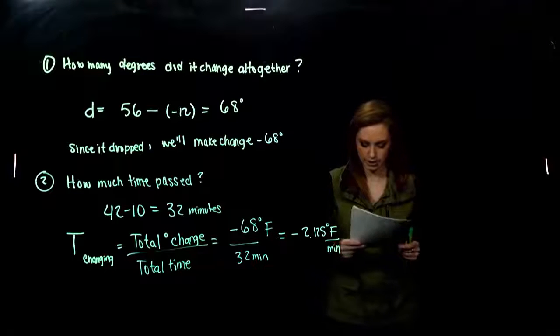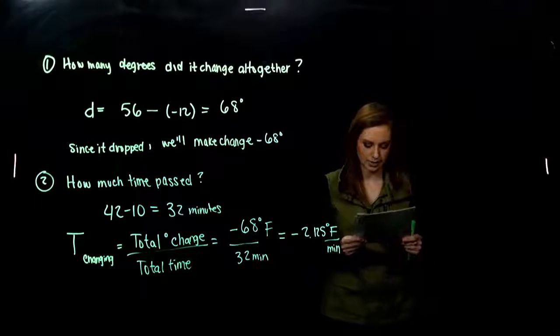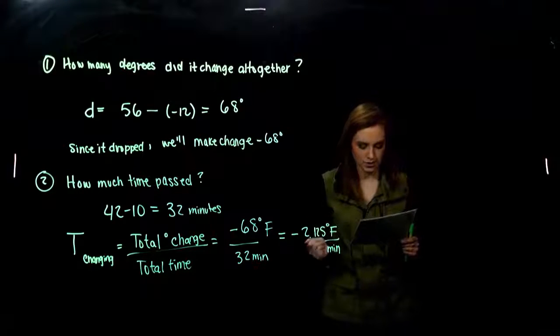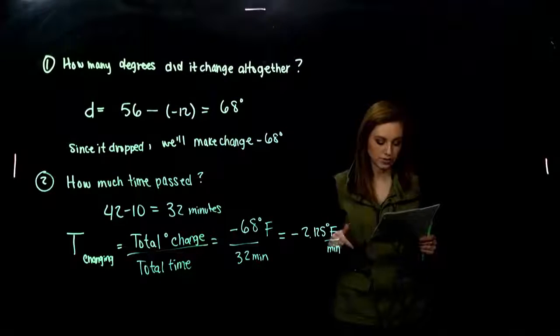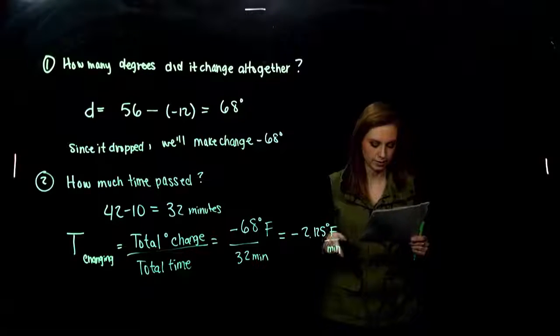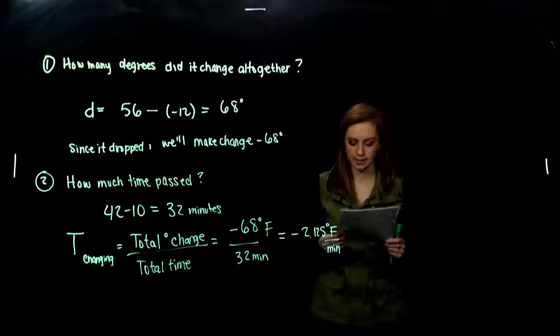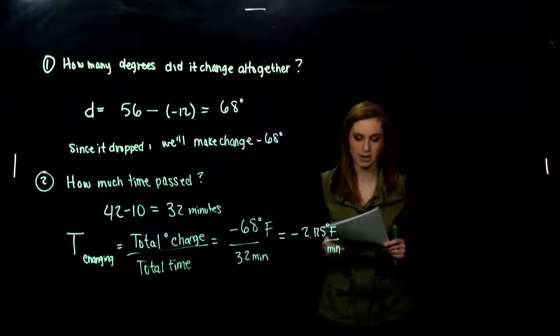Alright, one for you to try. During a chemical reaction, temperature in a beaker decreased every minute by the same number of degrees. Similar story. The temperature was 71 degrees Fahrenheit at 2:12. By 2:37, the temperature had dropped to negative 14. By how many degrees did it change each minute?